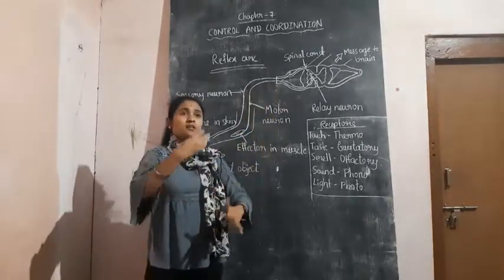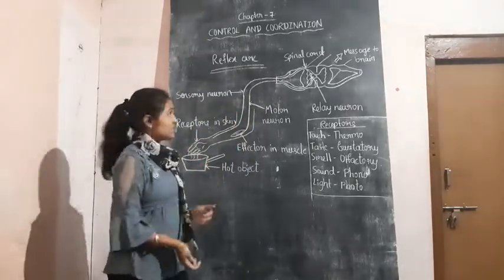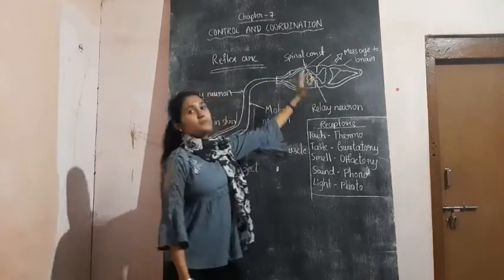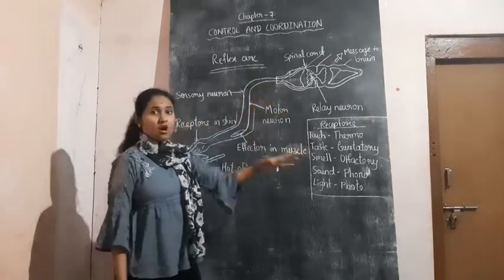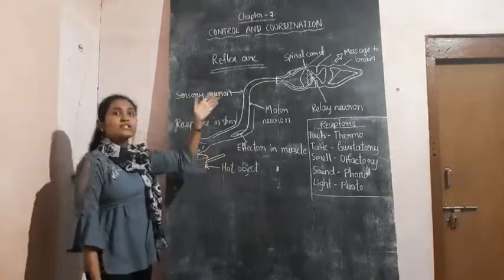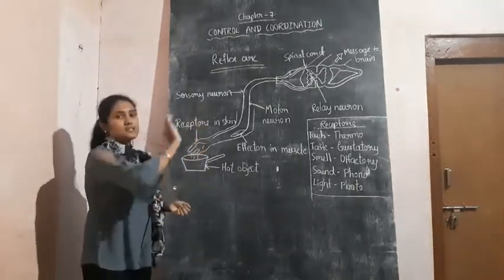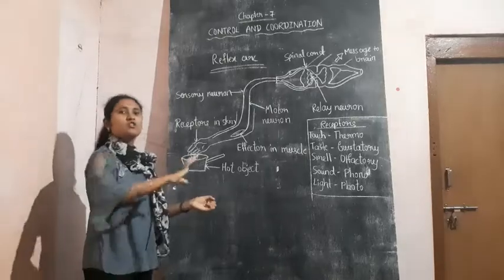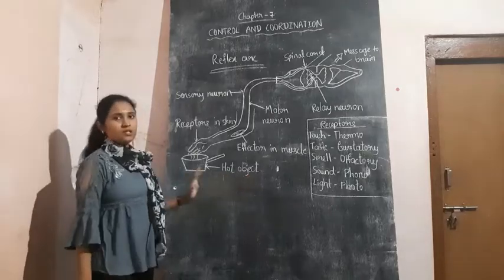So instead of going all the way to the brain and after all that thinking, what happens in the reflex arc is these nerves will directly go to the spinal cord. The information is transferred directly to the spinal cord. And the spinal cord is not the thinking part of our human body — it will not think about all the situations and whatever is happening around us. The spinal cord simply tells you to take off your hand.